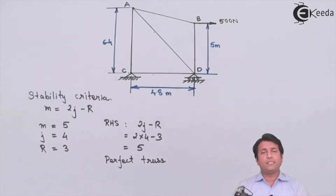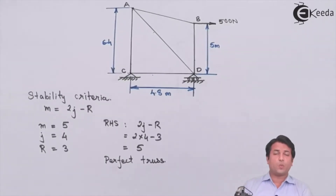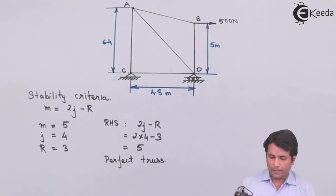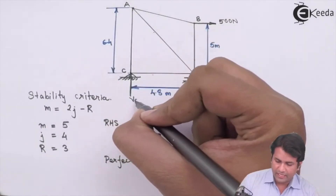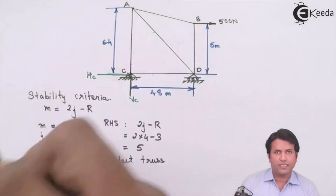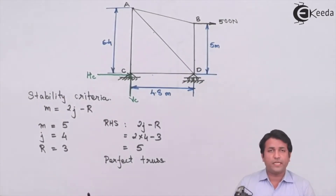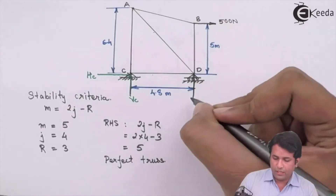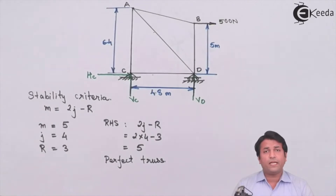The next step is to find the support reactions. We convert the hinge support into two reactions — a vertical reaction VC and a horizontal reaction HC at that position. For the roller support we convert it into a single support reaction perpendicular to the surface. Then we apply the conditions of equilibrium.